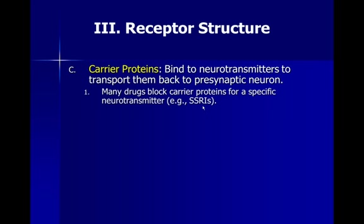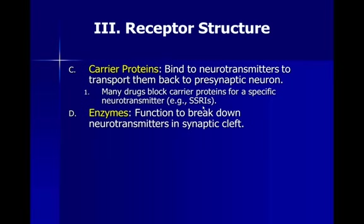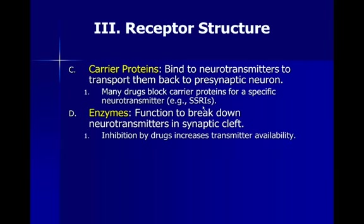We're going to talk more about that again when we talk about action potential — it's very important to understand. So you might want to make a note to come back and look at this again after we've gone through brain and neural anatomy. Another issue in the brain are enzymes actually right in the brain between neurons — these enzymes function to break down neurotransmitters in what's called the synaptic cleft, the space between neurons. Inhibition of these enzymes by drugs increases transmitter availability.